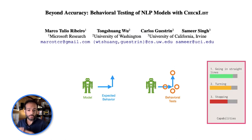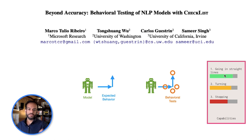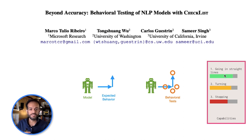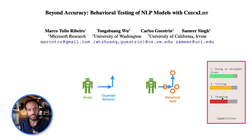You can group these tests into capabilities. For example, how well does this robot go in a straight line? Maybe we ran 10 different tests and it succeeded in 9 of the 10 — so we have a score for that capability. And similarly for turning and stopping, and so forth. This is a miniature model example, but let's look at how that can be done in NLP.